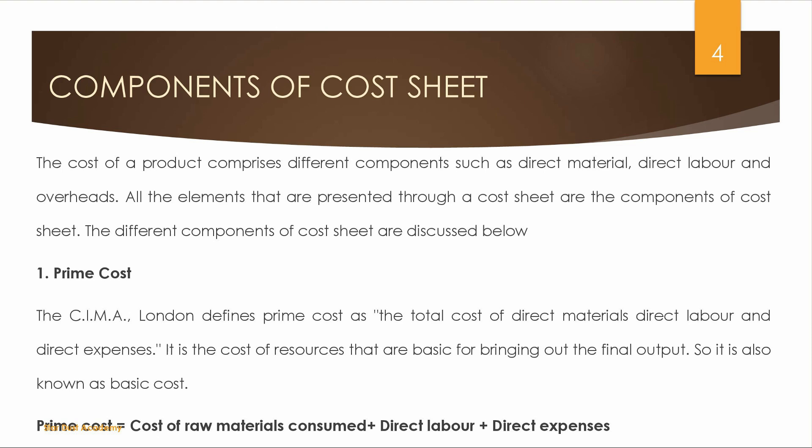Next are the cost sheet components. The first component is Prime Cost. CIMA London defines Prime Cost as the total cost of Direct Material, Direct Labor, and Direct Expenses.